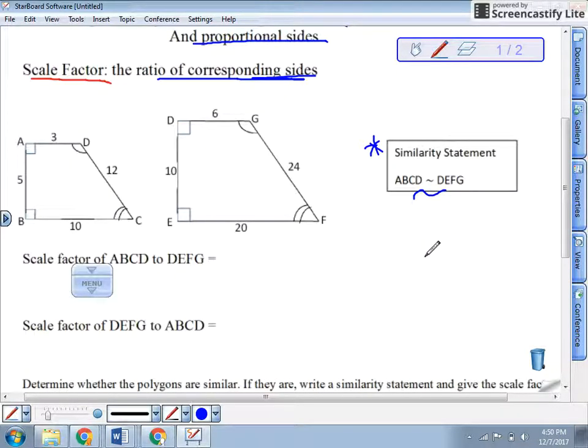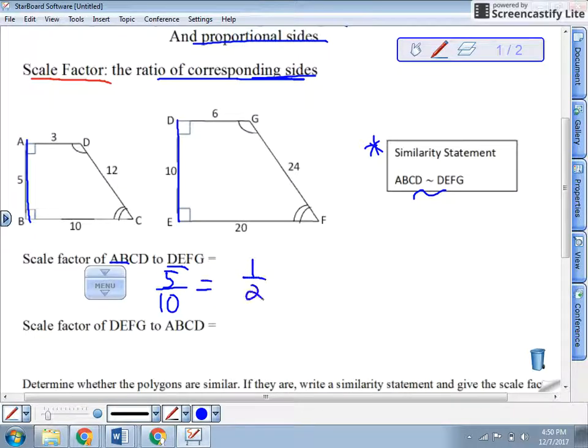So let's find the scale factor of ABCD to DEFG. Well, since we know they're similar, we pick any two sides to compare. Let's compare AB to DE. So AB is right here, DE is right here. Again, be careful. The pictures sometimes deceive you. You've got to look at that similarity statement, make sure they match up. So if AB is 5, DE is 10. So we always want to reduce those fractions or those ratios. So the scale factor is 1 half.